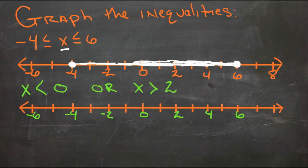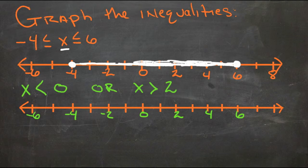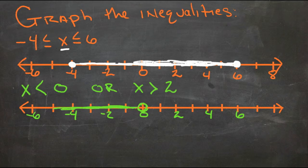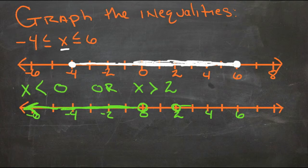In the second example, X is less than 0 or greater than 2. X can't be 0, so we draw an open circle at 0 and shade to the left because X is anything smaller than that. Then X can be greater than 2 — it can't be 2 either — so we draw an open circle at 2 and shade to the right.